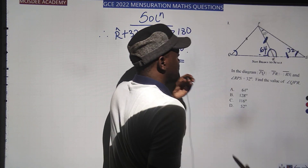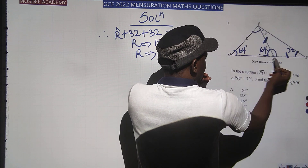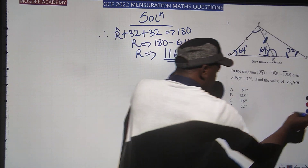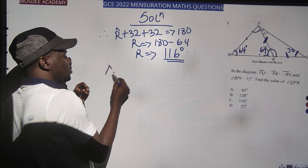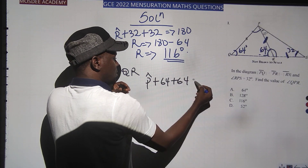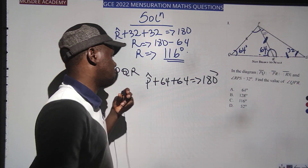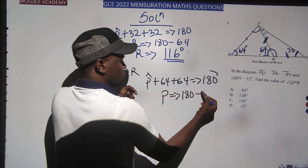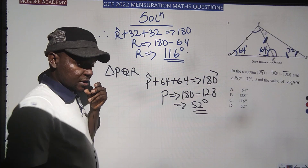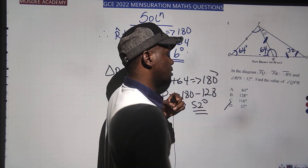This angle is also equal to the corresponding base angle, so the examiner is asking for that angle. The triangle PQR has angles 64°, 64°, and the unknown angle at P. Sum of angles in triangle PQR: unknown P + 64 + 64 = 180, so P = 180 minus 128 = 52°. The answer is 52°, and it will tally with one option.